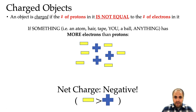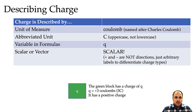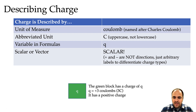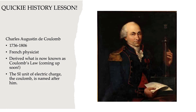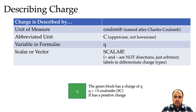When we describe charge we use a unit of measure called the coulomb, which is named after Charles Coulomb — quick history lesson. When we abbreviate the coulomb we use a capital C — uppercase, not lowercase.